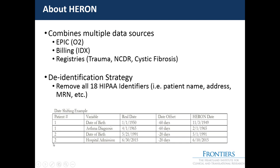For example, patient one's date of birth might have been 1/1/1950 and their asthma diagnosis was 4/1/1965, offset minus 60 days, so it would appear as November 3, 1949 and February 1, 1965. The date shift is consistent within a patient. This de-identified data works well for most researchers, but won't work as well if you're looking at a policy change or seasonal changes, where you would want identified data.